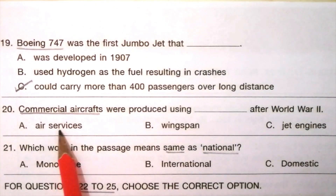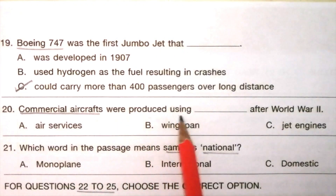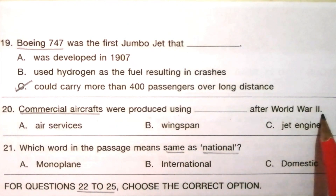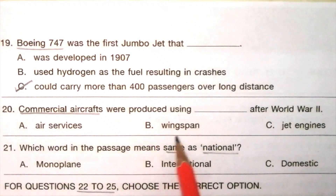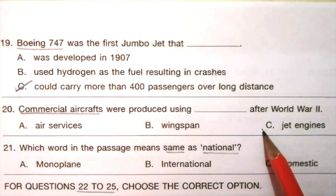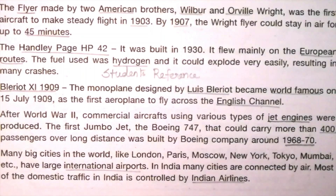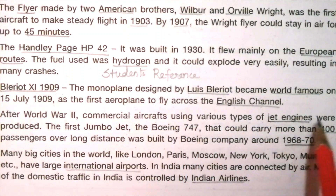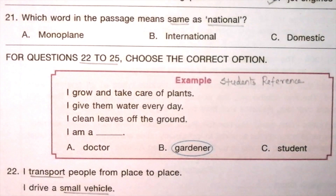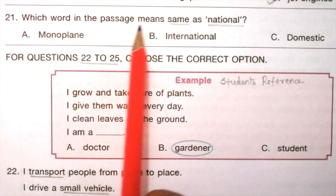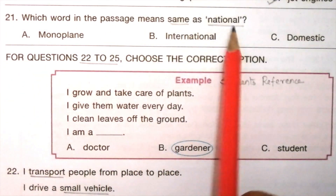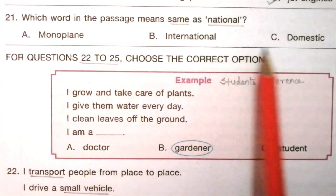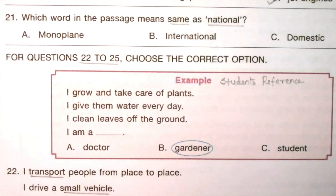Question 20: Commercial aircrafts were produced using ___ after World War II. Options: air services, wingspan, jet engines. The answer is C: jet engines. The answer is given here: after World War II, commercial aircrafts using various types of jet engines were produced. Question 21: Which word in the passage means the same as national? Options: monoplane, international, domestic. The answer is C: domestic.